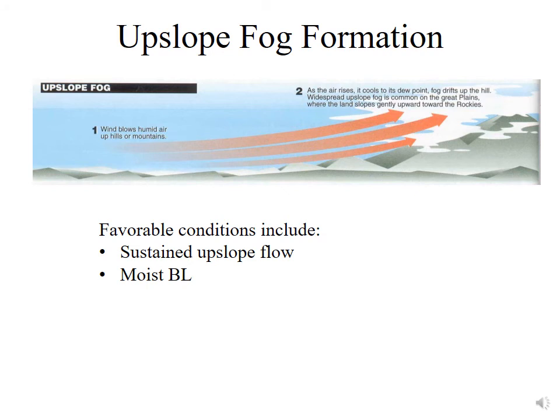We also have upslope fog formation. In this case, air is moving over topography that is increasing in height. Along the Wasatch, if air moves toward the mountains and can't go around them, it flows upslope. As it does so, it may reach its dew point temperature or lifting condensation level, and a cloud forms that is in contact with the ground. This is very common in Kansas and Colorado, where a gentle slope rises from the plains up to the Rockies — easterly flow moving upslope can create fog. The favorable conditions are a sustained upslope flow and a moist boundary layer.